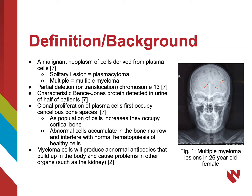A characteristic Bence-Jones protein can be detected in the urine of over half of diagnosed patients. Multiple myeloma begins with the clonal proliferation of plasma cells, which will first occupy cancellous bone space. Then, as the population of cells increases, they will occupy cortical bone. Finally, as abnormal cells accumulate in the bone marrow, they will interfere with the normal hematopoiesis of healthy cells.